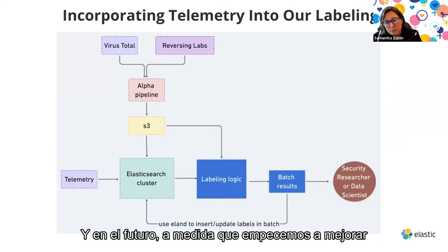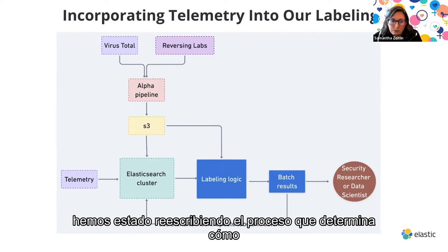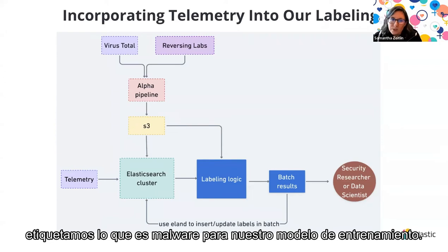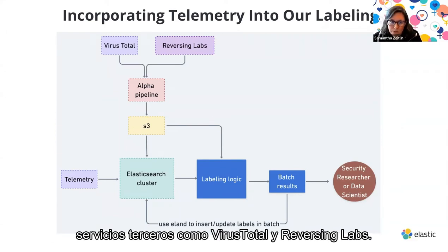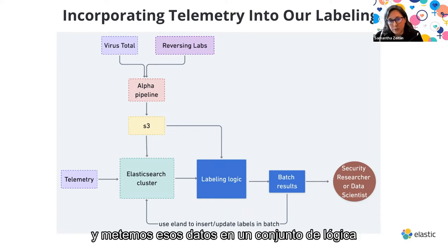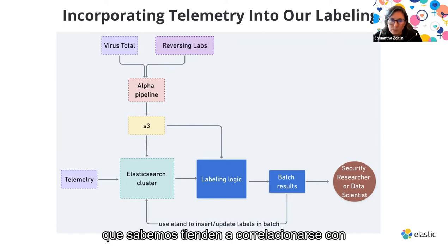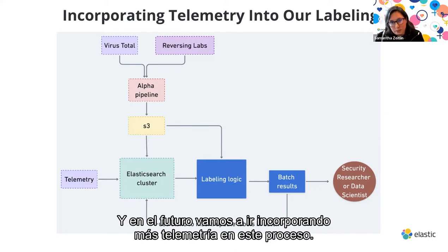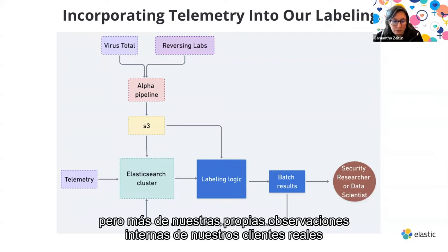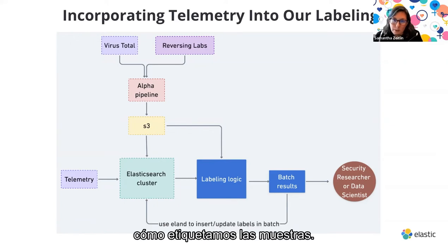As we improve automation, we've been rewriting the process that determines how we label malware for model training. We have a system that pulls in data from third-party services like VirusTotal and Reversing Labs — processed by the data engineering team upstream. We pull that data into a set of logic that uses heuristics to identify important fields that correlate with known malware. In the future, we'll incorporate more telemetry into this process, using not just third-party data but internal observations from actual customers to improve how we label samples and train the model.